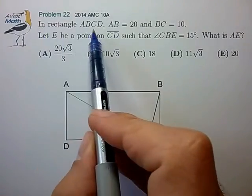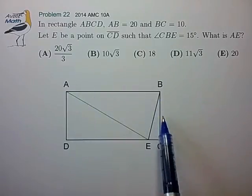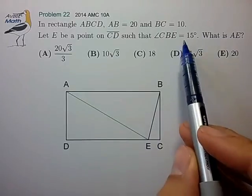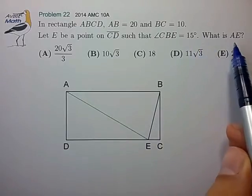In rectangle ABCD, AB of length 20, BC of length 10, let E be a point on CD such that angle CBE is 15 degrees. What is the length AE?